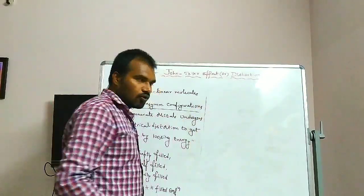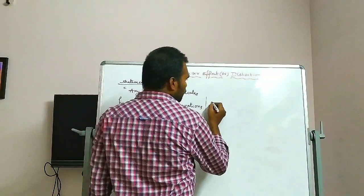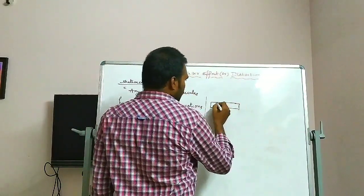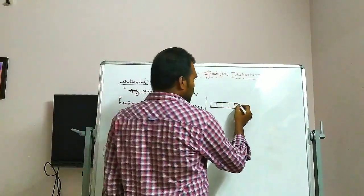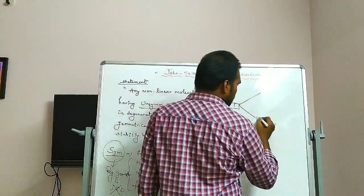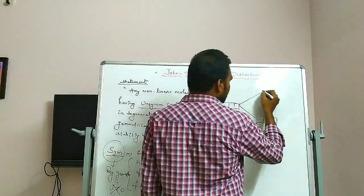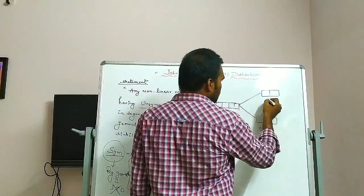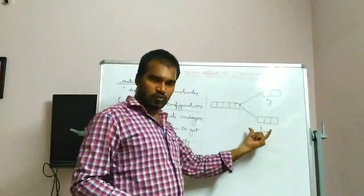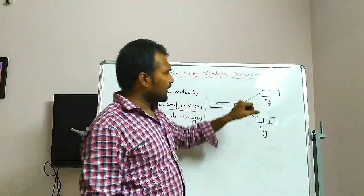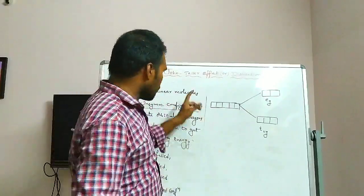Before we go into detail about Jahn-Teller distortion, let us have a brief recap about crystal field theory. According to crystal field theory, when ligands approach the central metal ion, the five degenerate d orbitals split into two sets: three orbitals called the T2g set and two orbitals called the Eg set, in the case of octahedral complexes. This is called crystal field splitting.